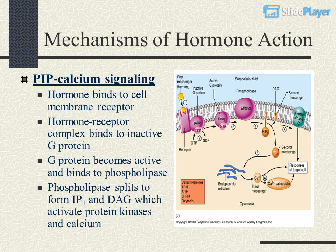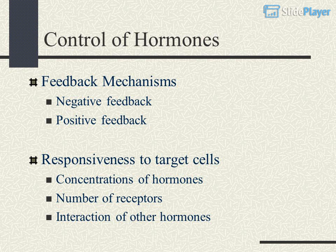BIP-Calcium Signaling: the hormone binds to a cell membrane receptor; the hormone-receptor complex binds to an inactive G-protein; the G-protein becomes active and binds to phospholipase; phospholipase splits to form IP3 and DAG, which activate protein kinases and calcium signaling.